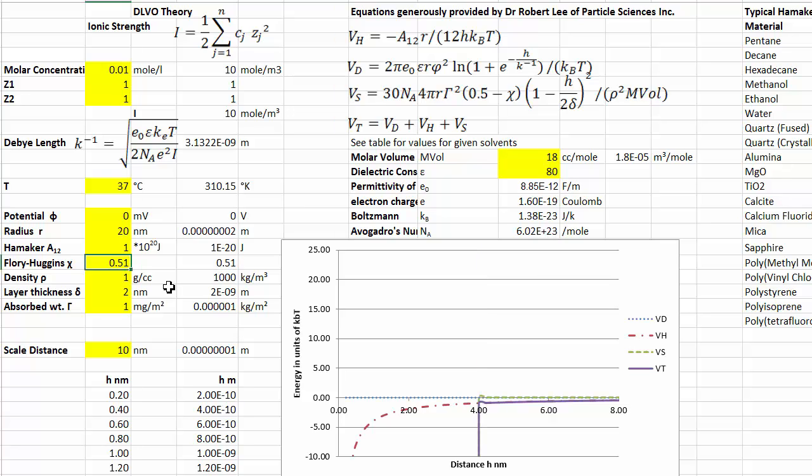And then we make it 0.51, because we've just made the solvent a little bit worse. And now we have a catastrophe. Not only do we not have steric stabilization, but we have steric attraction. When it goes over this Flory-Huggins limit, the particles positively want to clump together.